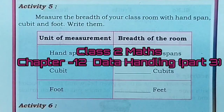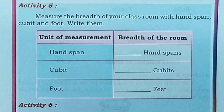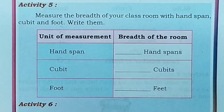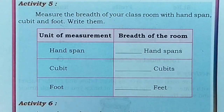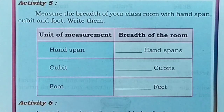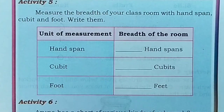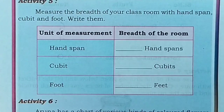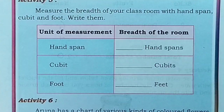Activity 5. Measure the breadth of your classroom with handspan, cubit and foot. Write them. Here they have given a table with units of measurement: handspan, cubit, and foot. Using this measurement we have to count the breadth of the room. So what do you mean by handspan, children?